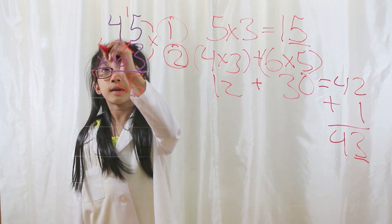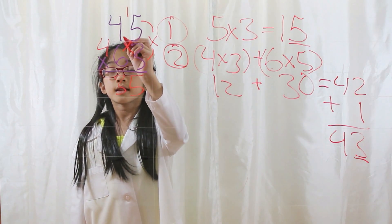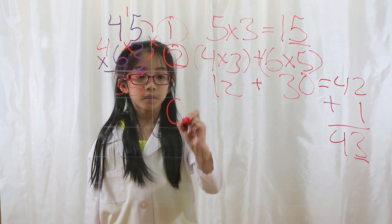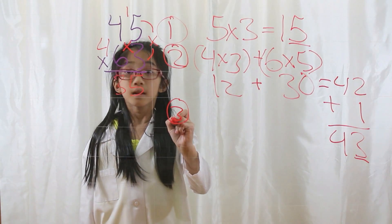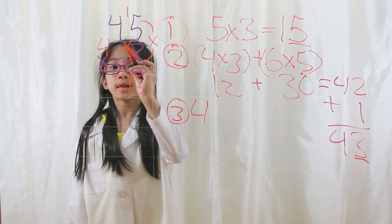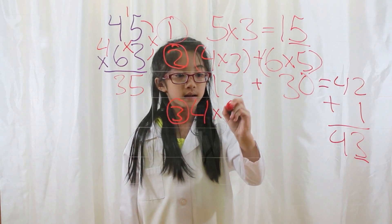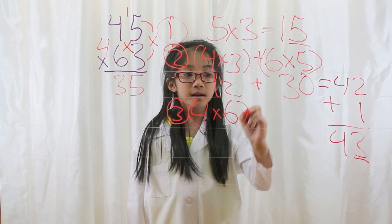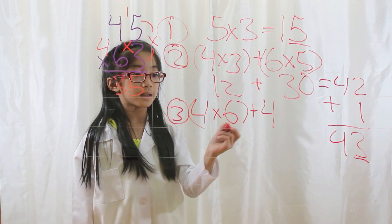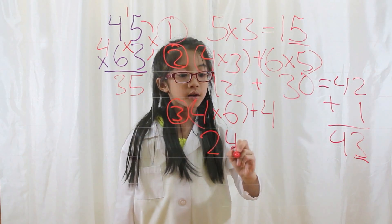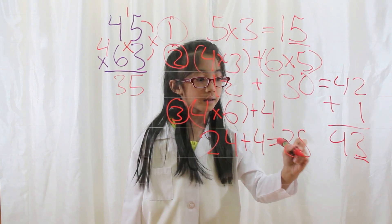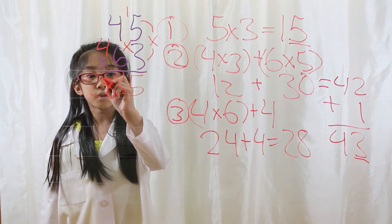You write your 3 down and you carry the 4 between the tens digit of the first number and the tens digit of the second number. Step 3. You take the tens digit of the first number, which is 4, and multiply it by the tens digit of the second number, which is 6. 4 times 6 is 24, then you add the 4 that you carried: 24 plus 4 equals 28. You put 28 in front of the 35.